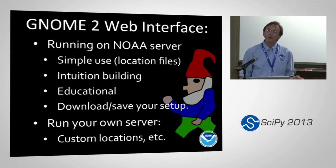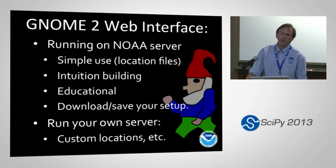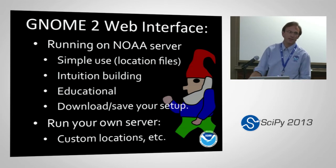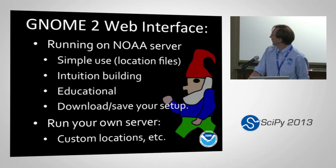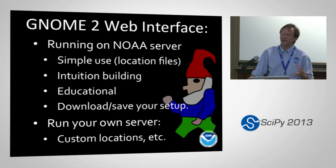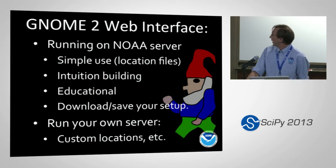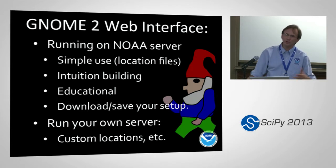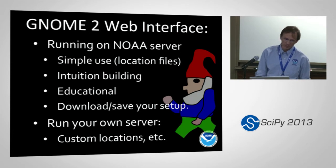We're also building a web interface to the new GNOME model — another reason why having Python drive it has been really helpful. It'll run on NOAA's server with pre-set-up configurations for standard locations, similar to what we currently call location files. These are really used for intuition building and educational purposes; for operational modeling you need to tweak and control it more. You can get it set up the way you want, download and save that, and reload it. Now that we're opening up the code, you could also run your own server if you want.